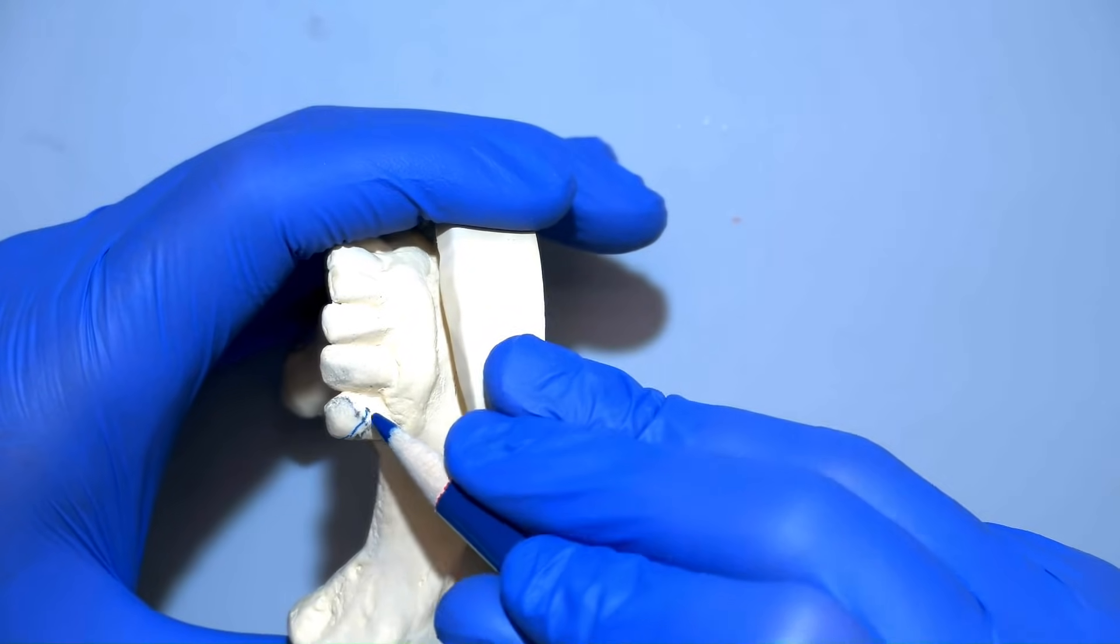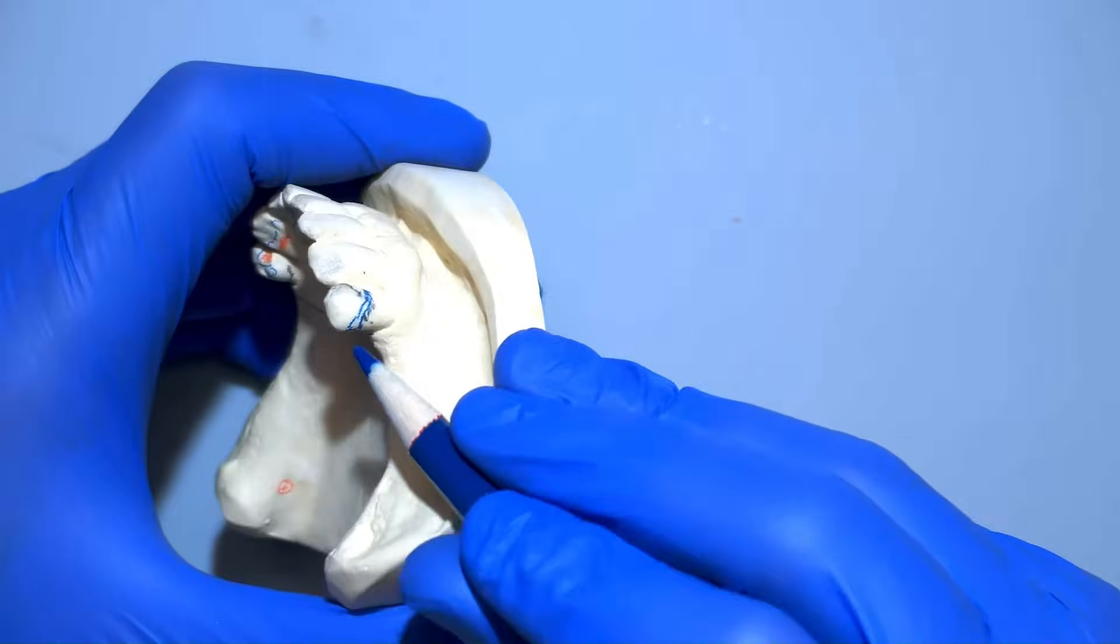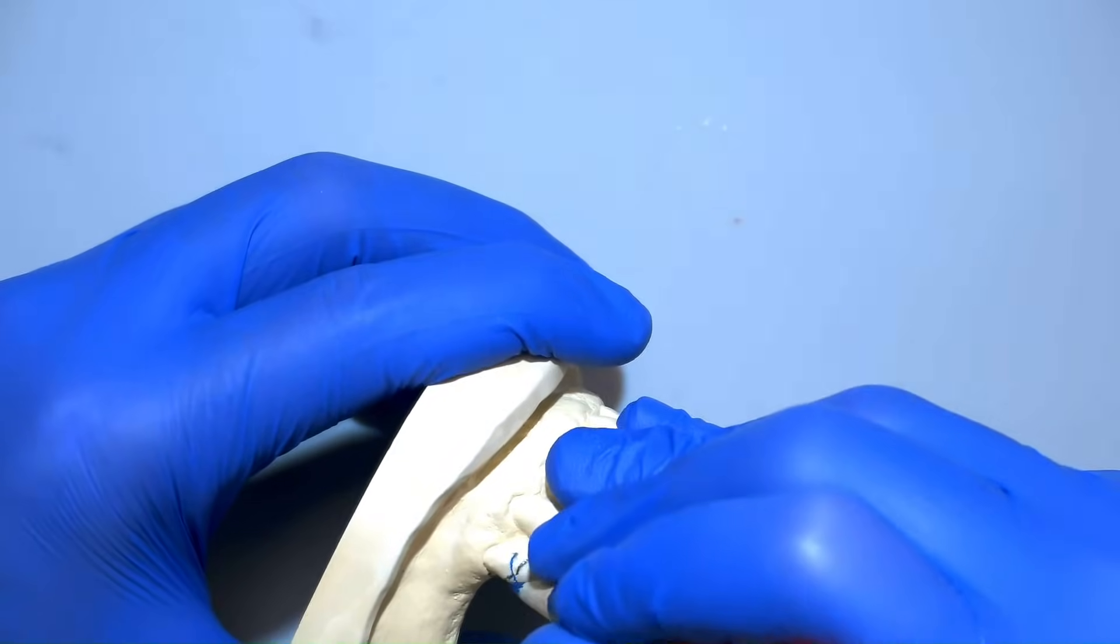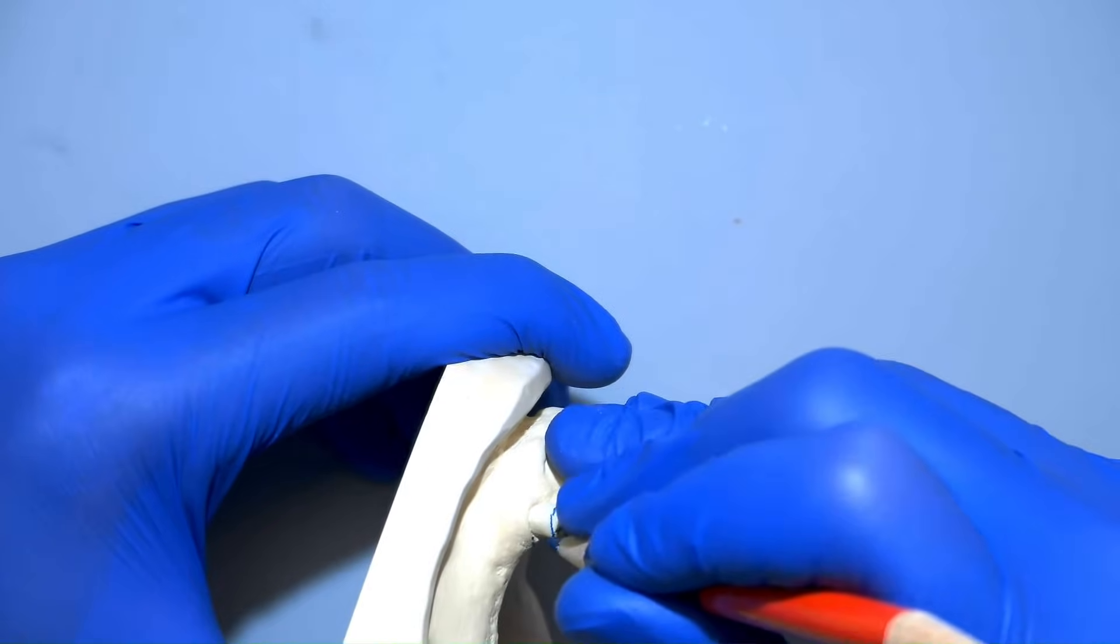Next, we're going to start drawing the retentive clasps. It's important to note that retentive clasps remain occlusal to the height of contour up until the terminal third, where they engage the undercut.